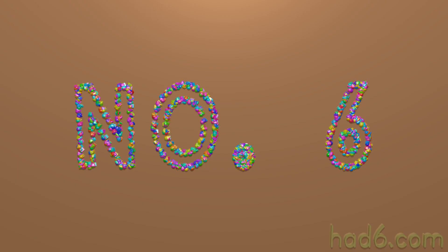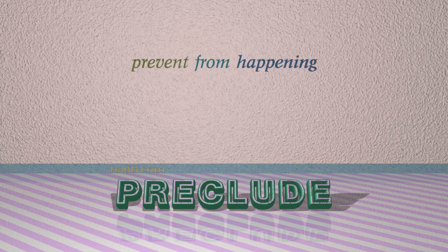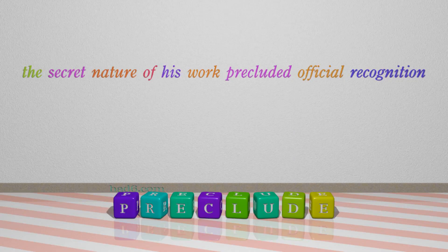Number 6: Preclude. Which means prevent from happening. For example: The secret nature of his work precluded official recognition.